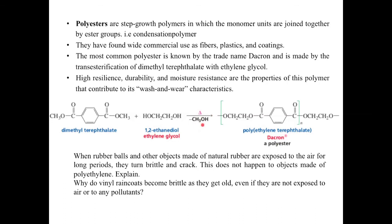Rubber objects made from natural rubber become brittle and crack when exposed to air for long periods due to ozonolysis of the double bonds. Similarly, vinyl raincoats become brittle as they age because certain parts of the polymer molecules — added without forming strong chemical attachments — gradually leave the surface over time, making the material increasingly brittle.